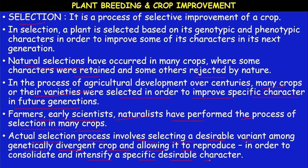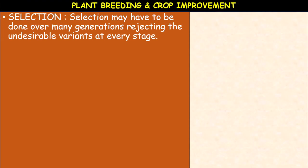The process involves selecting a desirable variety among genetically divergent crops — selecting those with better qualities. We have to allow it to reproduce. The selection may have to be done over many generations, rejecting undesirable variants at every stage. Every generation, some good qualities and some poor qualities are produced. The poor qualities must be eliminated; only the good qualities are selected and allowed to breed again.